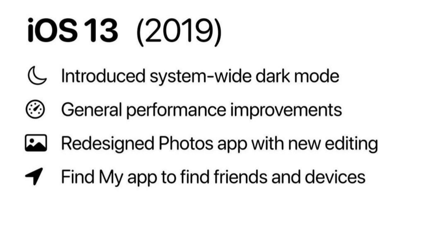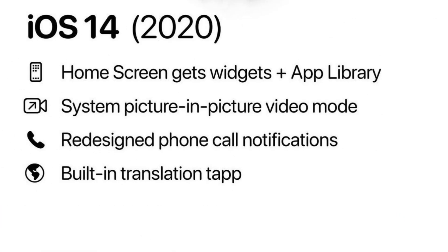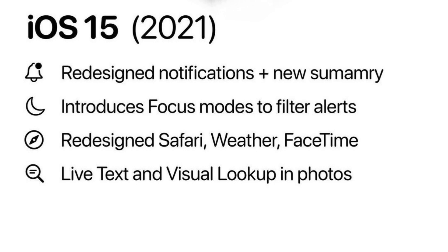Find My app to find friends and devices. iOS 14 (2020): Home screen gets widgets plus App Library, system Picture-in-Picture video mode, redesigned phone call notifications, and built-in translation. iOS 15 (2021): Redesigned notifications with new summary, Focus modes to filter alerts, redesigned Safari, Weather, and FaceTime.